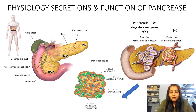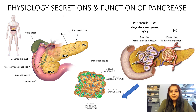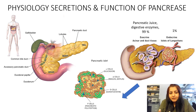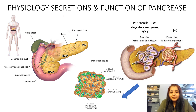Before going into the depth of how metformin maintains glucose concentration in the blood, we need to know how in normal conditions the body maintains glucose concentration and which organs are responsible for that. The pancreas is an organ of both the digestive system and the endocrine system, and it has specific cell types present in the islets of Langerhans.